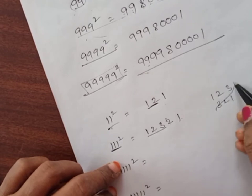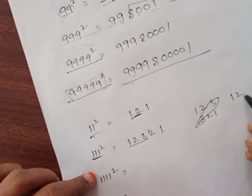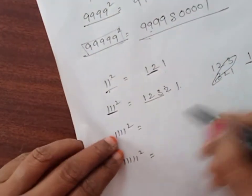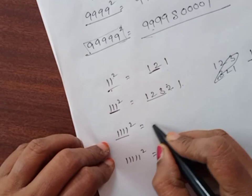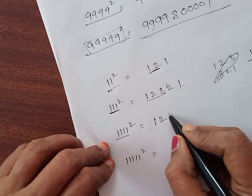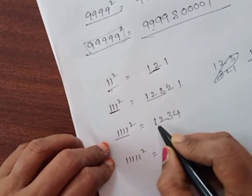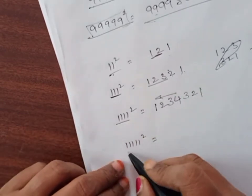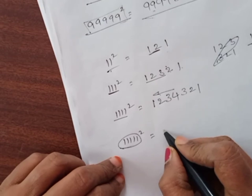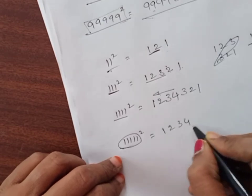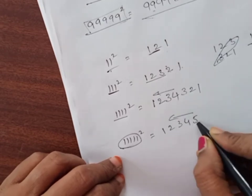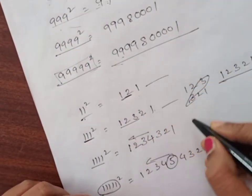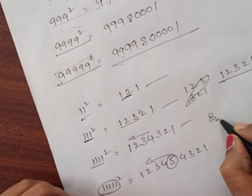Next, it is equal to 3. 2, 1, 2, 1. So if you look at this, it is equal to 2. Next, it is equal to 4. 4, 1, 1, 2, 3, 4. 2, 1. 5, 1, 2, 3, 4, 5. This is equal to 4. 4, 3, 2, 1. 1, 2, 3, 1. If you look at this, it is equal to 1.